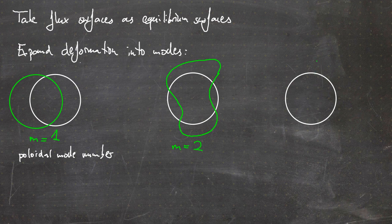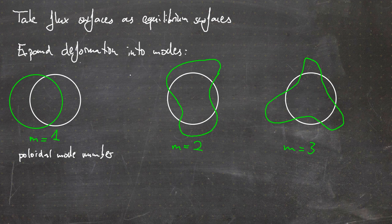An m=3 perturbation corresponds to a three-fold symmetric shape. You get the idea. Now let's assume we have a linear tokamak, i.e., a screw pinch.